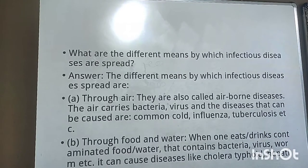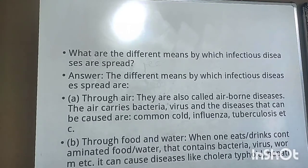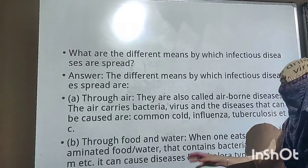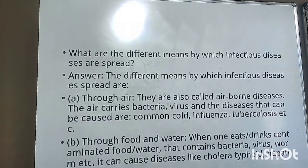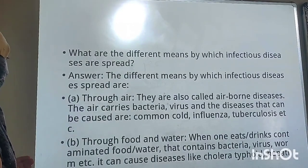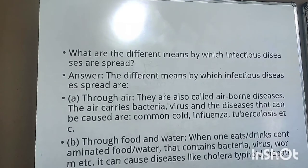The next way is through food and water. When one eats or drinks contaminated food or water which contains bacteria or viruses, it can cause diseases like cholera and typhoid. You have to mention its definition and then give examples — at least two examples must be written.